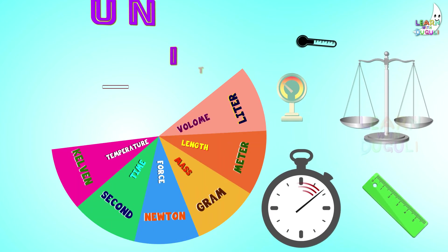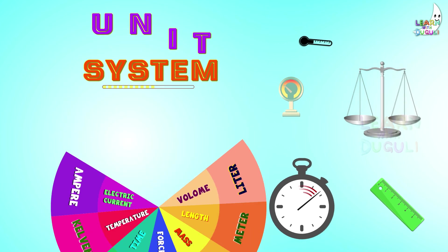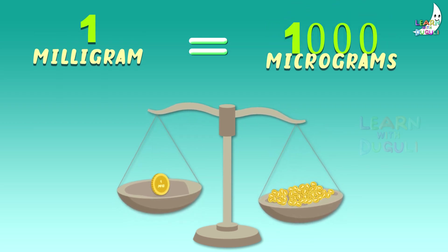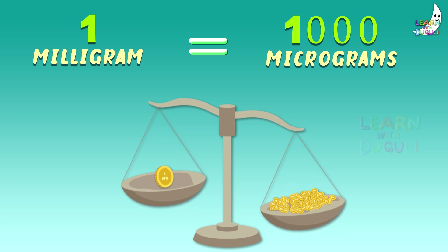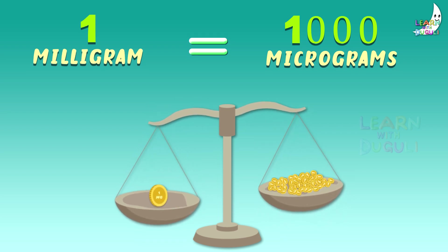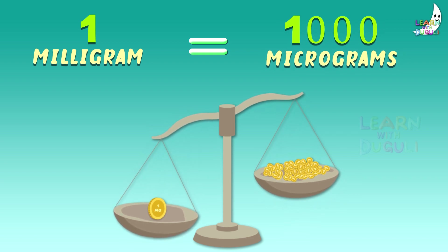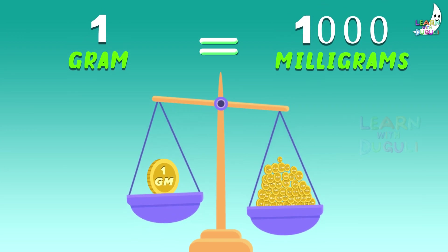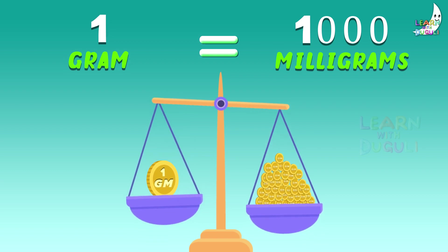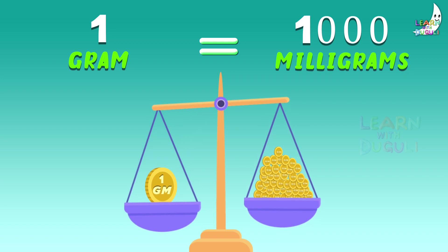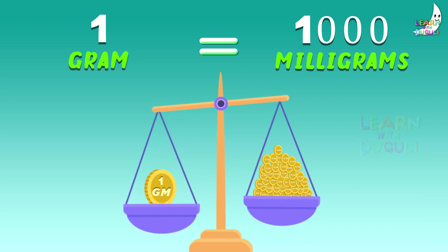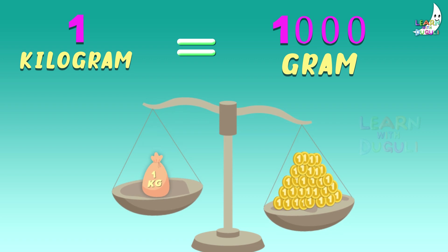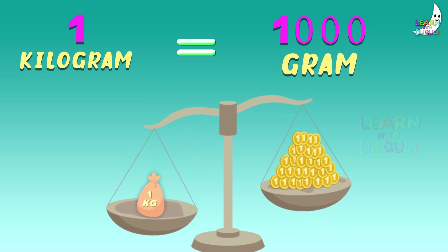Today's topic is Unit System. Unit of Mass: 1 milligram is equal to 1000 microgram. 1 gram is equal to 1000 milligram. 1 kilogram is equal to 1000 gram.